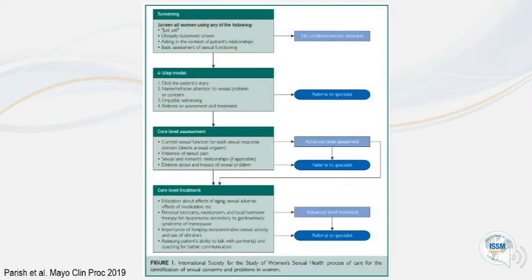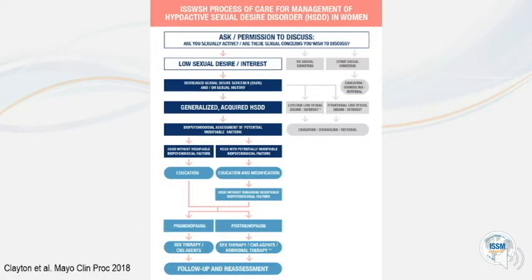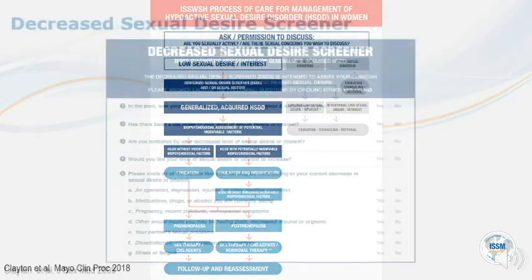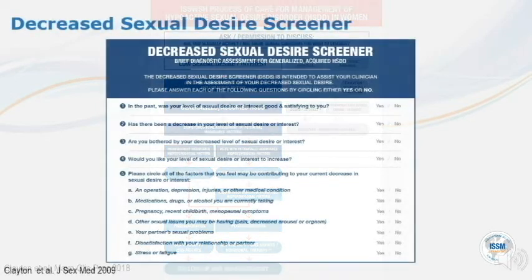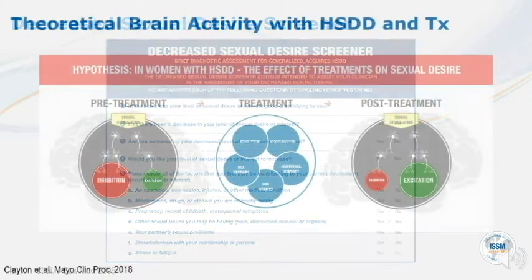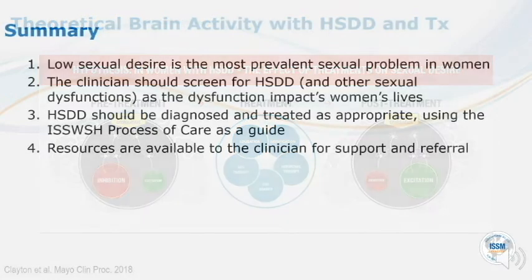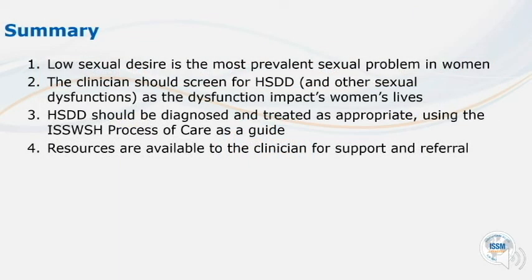The ISWISH process of care addresses identification of sexual concerns and problems in women, including hypoactive sexual desire disorder. To determine whether a woman has HSDD, she must answer yes to specific criteria. It is theorized that HSDD is a condition in which inhibition is greater than excitation. Low sexual desire is the most prevalent sexual problem in women.